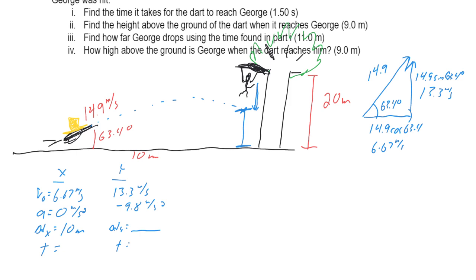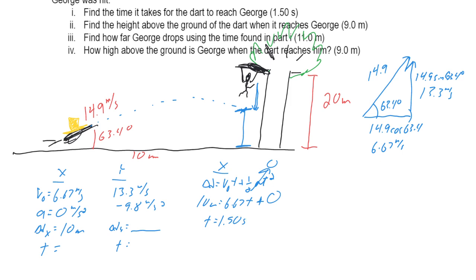Let's find the time using the x-direction. Using d = v₀t + ½at²: 10 = 6.67t + 0 (since horizontal acceleration is zero). Solving gives t = 1.50 seconds.